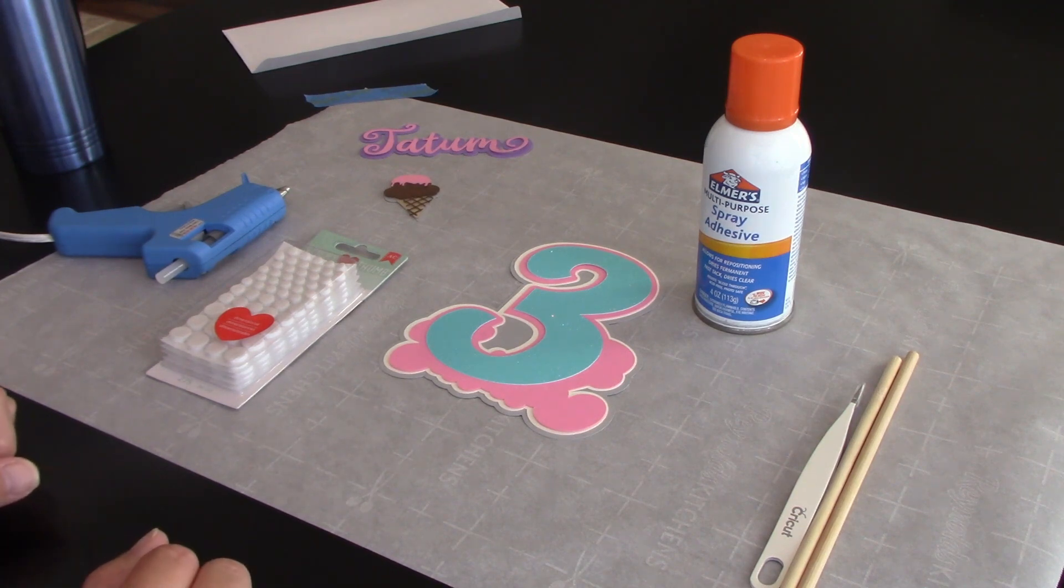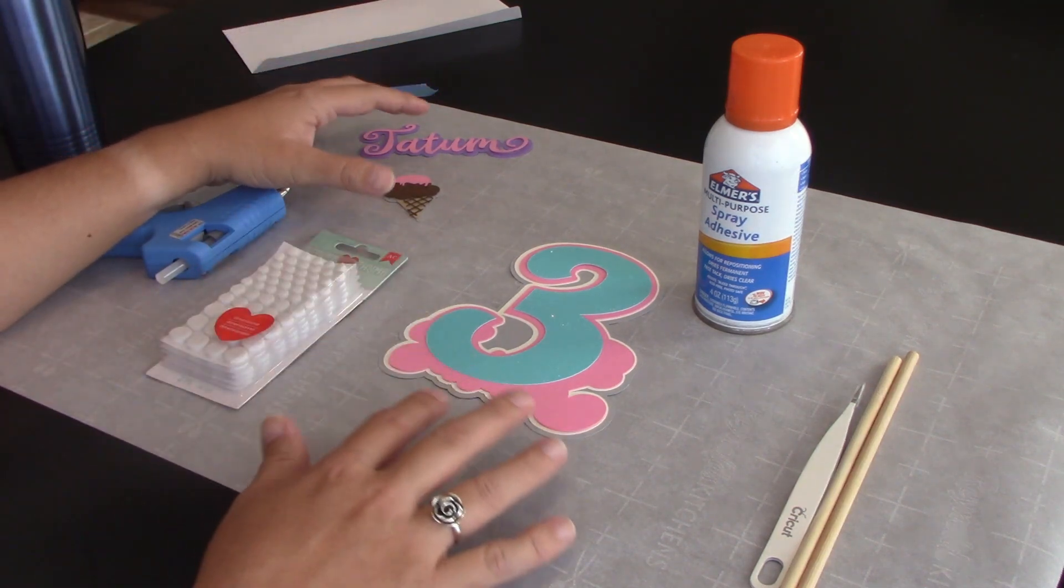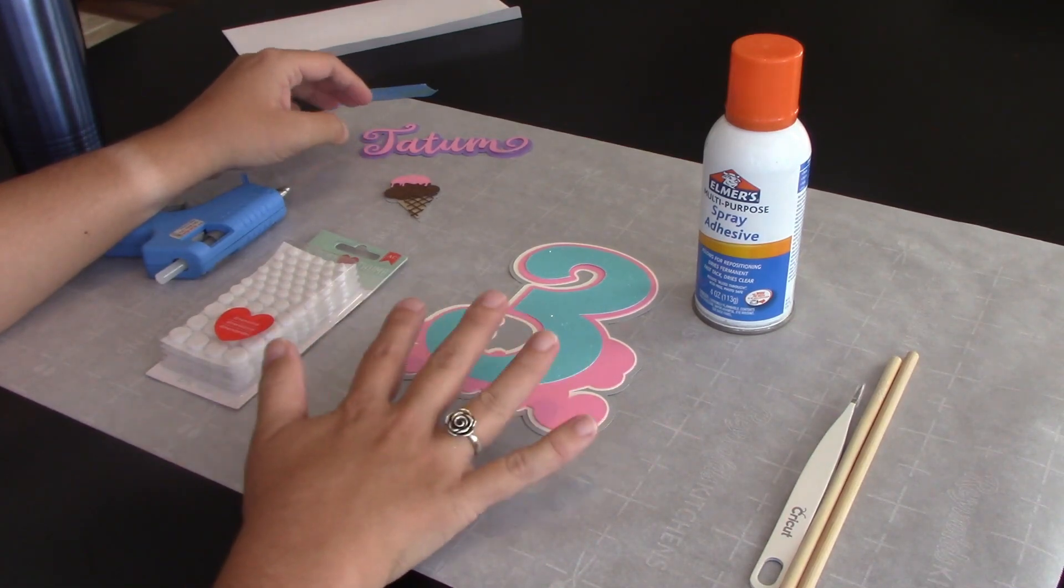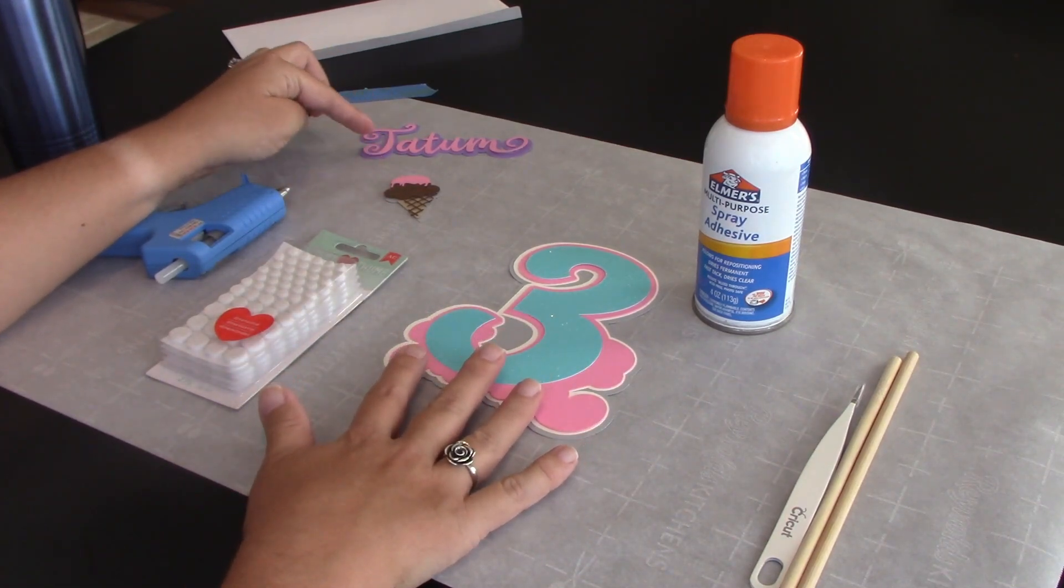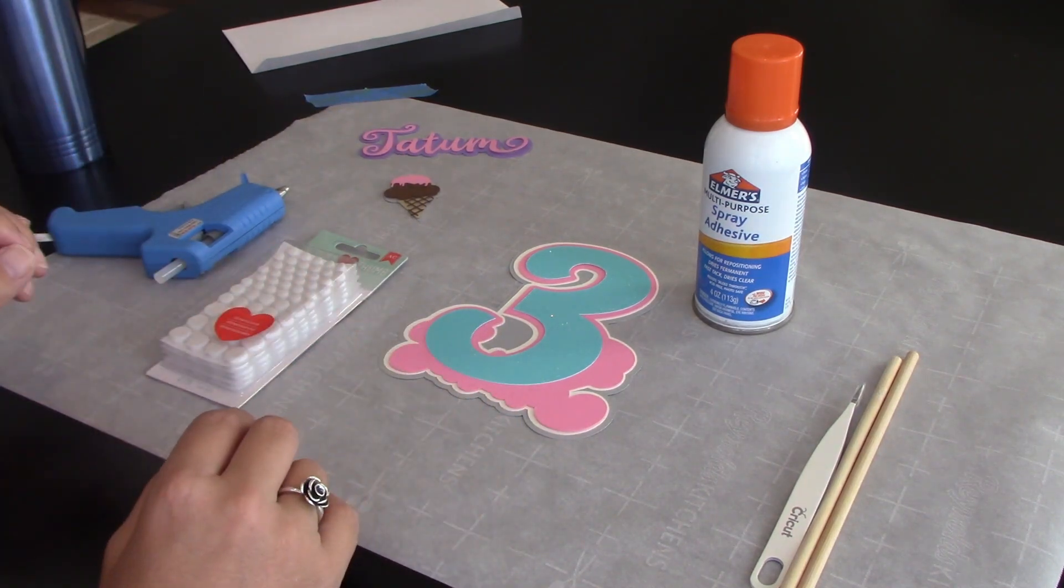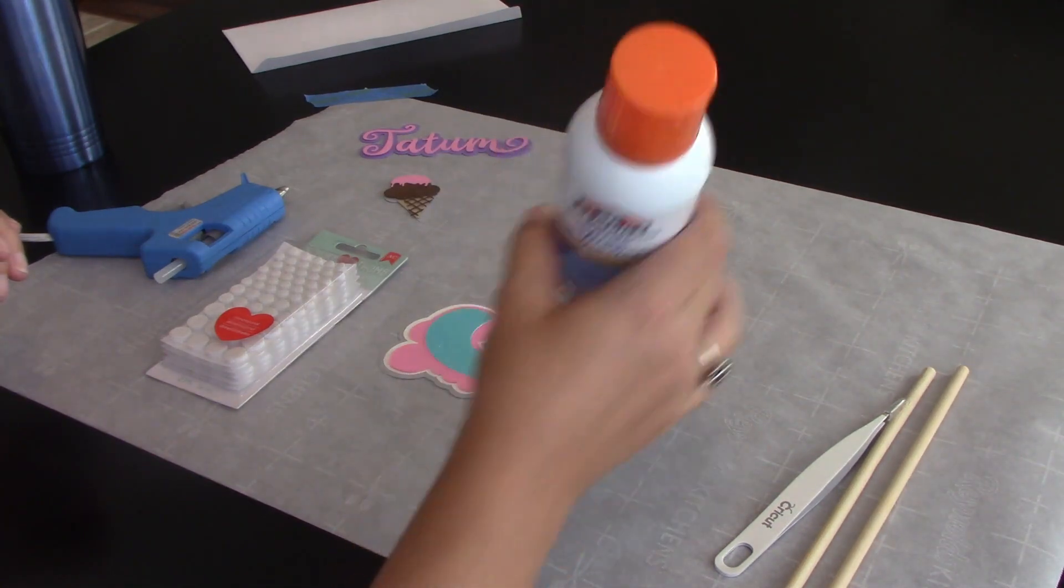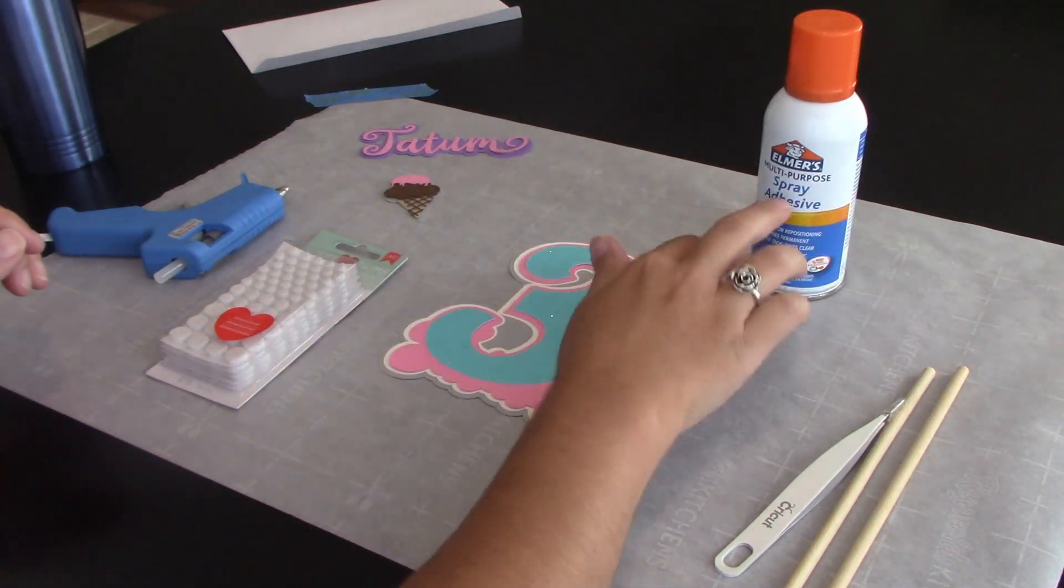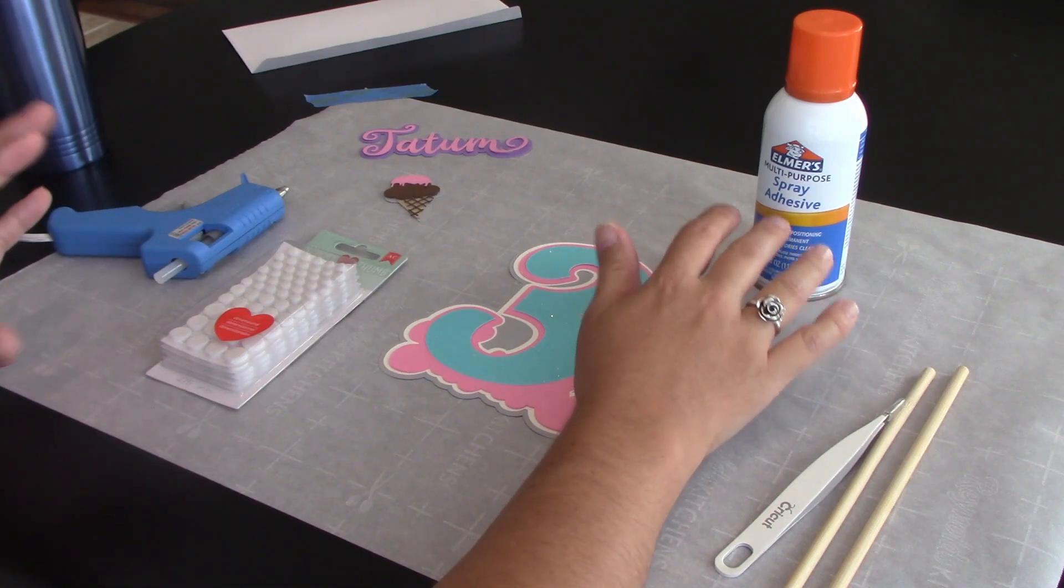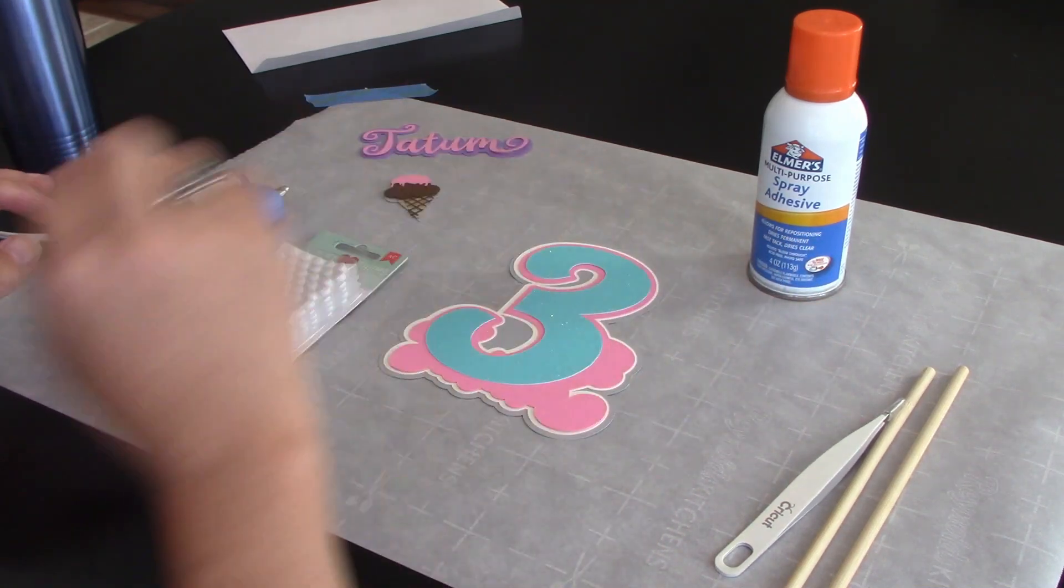What you need to assemble it, you need your design all cut out. I've got the three and the base layers here and then my little embellishments, Tatum and the ice cream cone here. You're going to need all of that cut out. You're going to need some spray glue, really any kind is fine but I like this because you can use it for permanent adhesion and temporary adhesion which is cool.